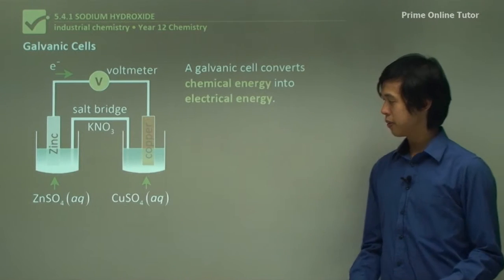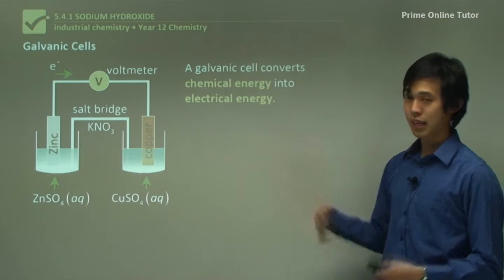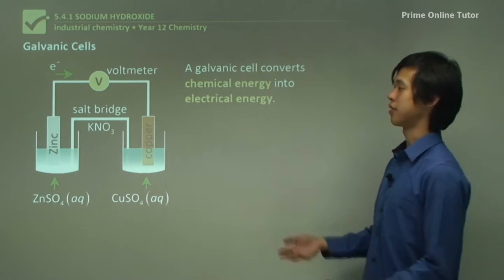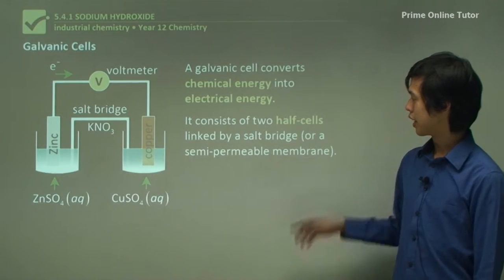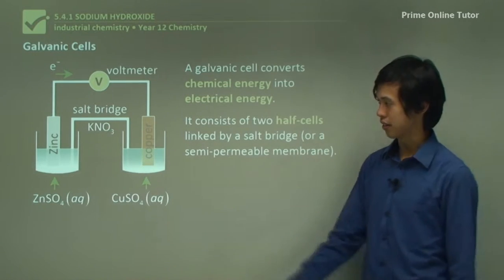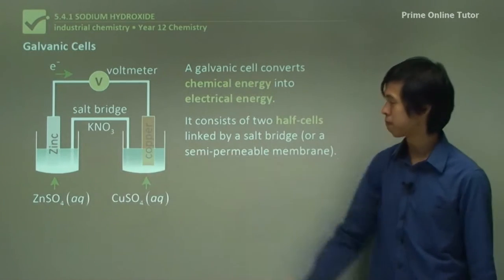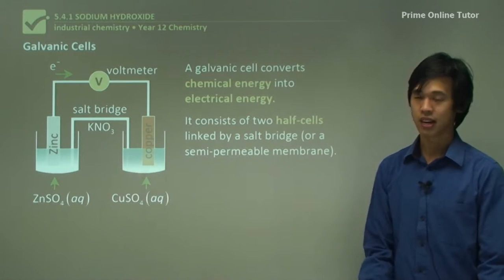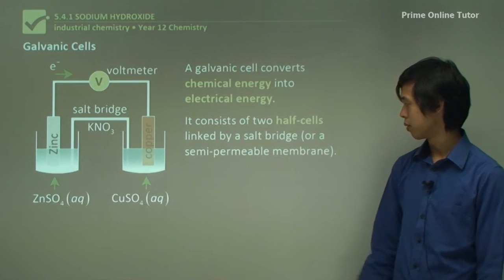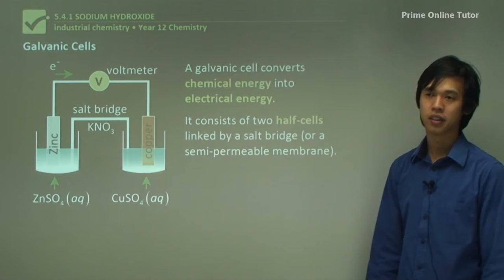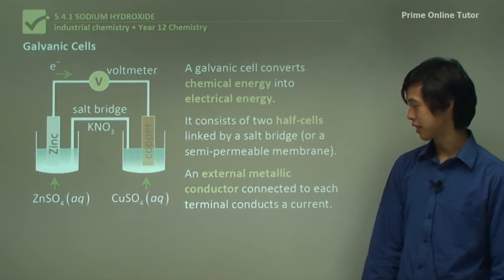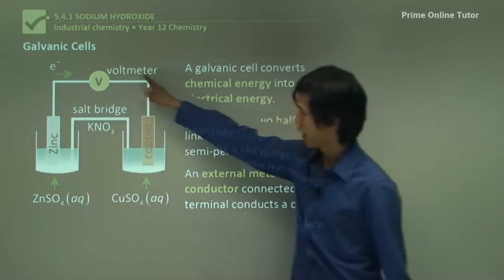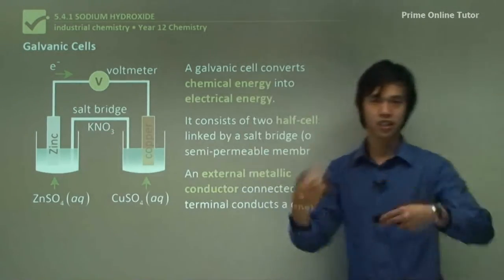A galvanic cell converts chemical energy — the instabilities of chemicals — into electrical energy, the movement of electrons. It consists of two half cells; in this picture we have a half cell of zinc and a half cell of copper, linked by a salt bridge, which is KNO₃ (potassium nitrate) or some kind of semi-permeable membrane. An external metal conductor connected to each terminal conducts current through the circuit.